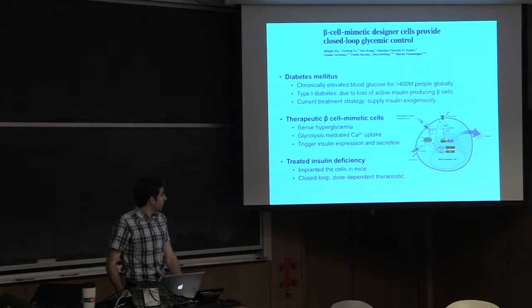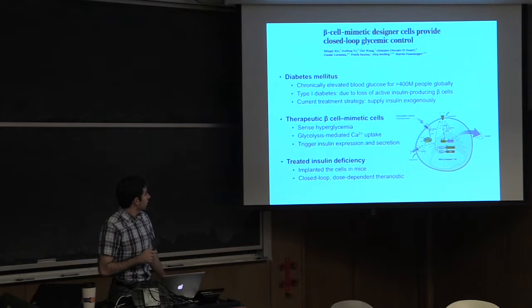And one of the big pushes is diabetes, and so this is for almost half a billion people globally, it results in elevated blood glucose. And in type 1 diabetes, this is specifically due to the inability to have insulin-producing beta cells that work well.